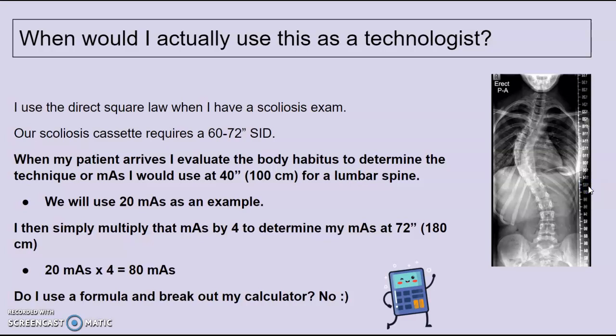When would I actually use this? I use the direct square law when I have a scoliosis exam at our facility. Our cassette requires a 60 to 72 inch SID. So when my patient comes in, I look at their body habitus. And in my head, I think, well, what would I use for their lumbar spine at 40 inches? And that's where I start my numbers. So we're going to use 20 as an example. Say I'd use 20 mAs at 40 inches. Now I have to do a scoliosis exam at 72 inches. I simply multiply by 4. Do I break out a calculator and do the formula out? No. But that's just a cheater for kind of in the real world.